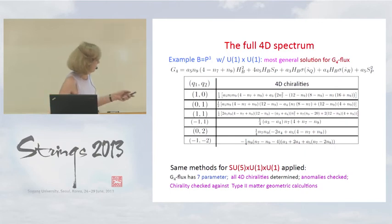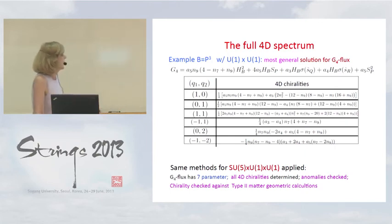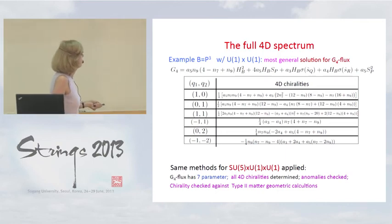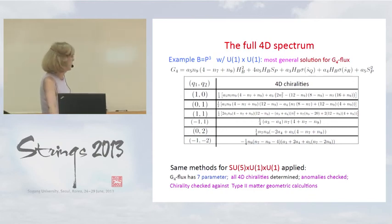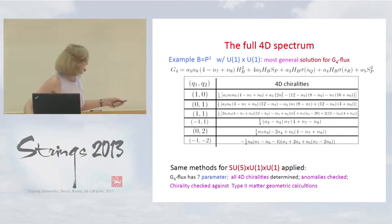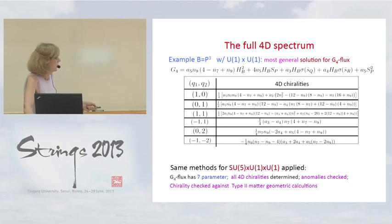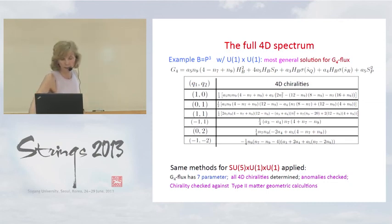For the example where the base is P3 and symmetry is U1 cross U1, the flux is parameterized by three parameters, giving complete determination of chiralities and anomaly cancellation. Similar methods apply to SU-5 cross U1 models, where constraints on G4 flux in F-theory are in terms of seven parameters, giving all 4D chiralities with anomalies checked. We also cross-check the type 2 matter geometric calculation against chiralities from M-theory/F-theory duality flux constraints.